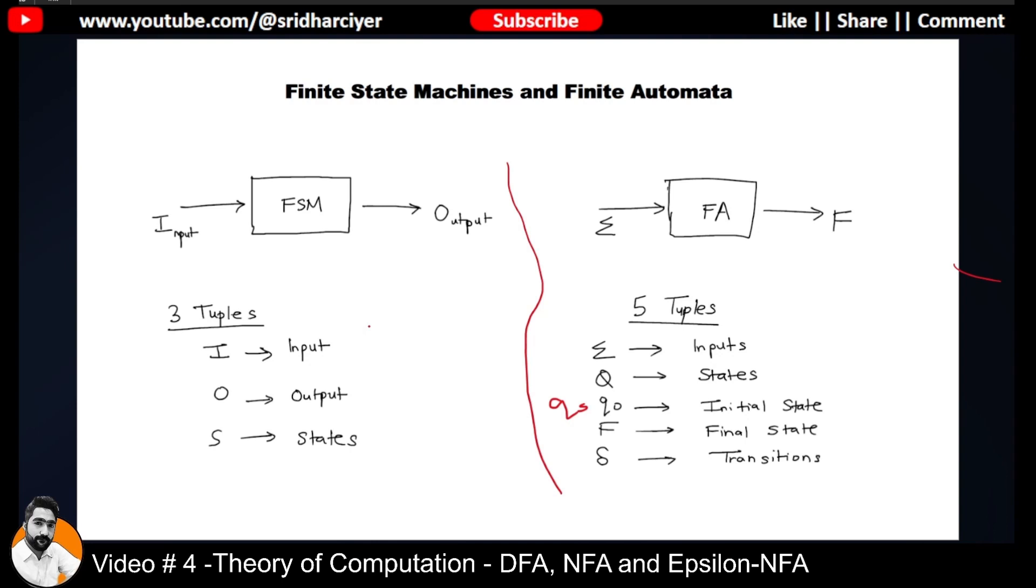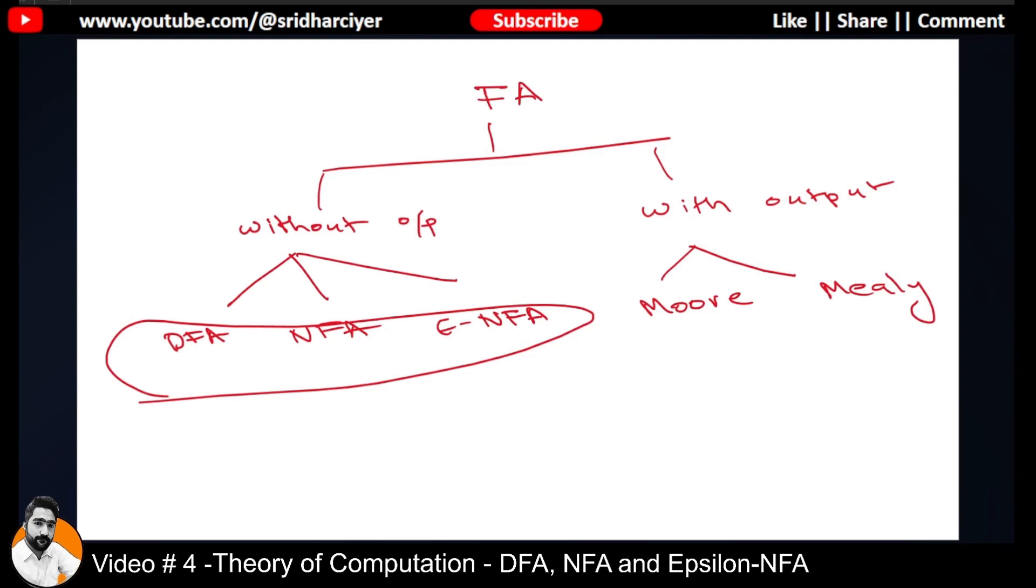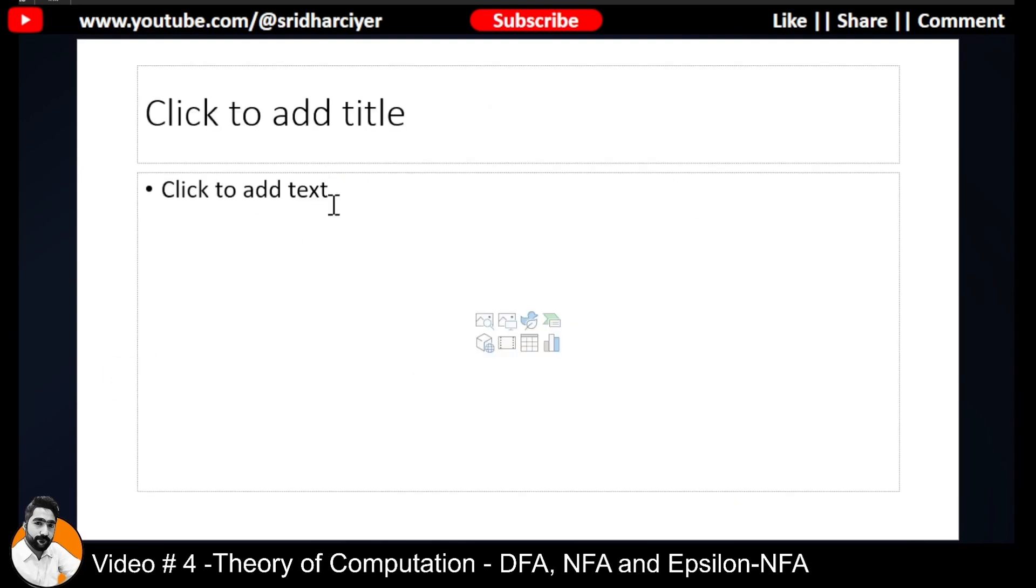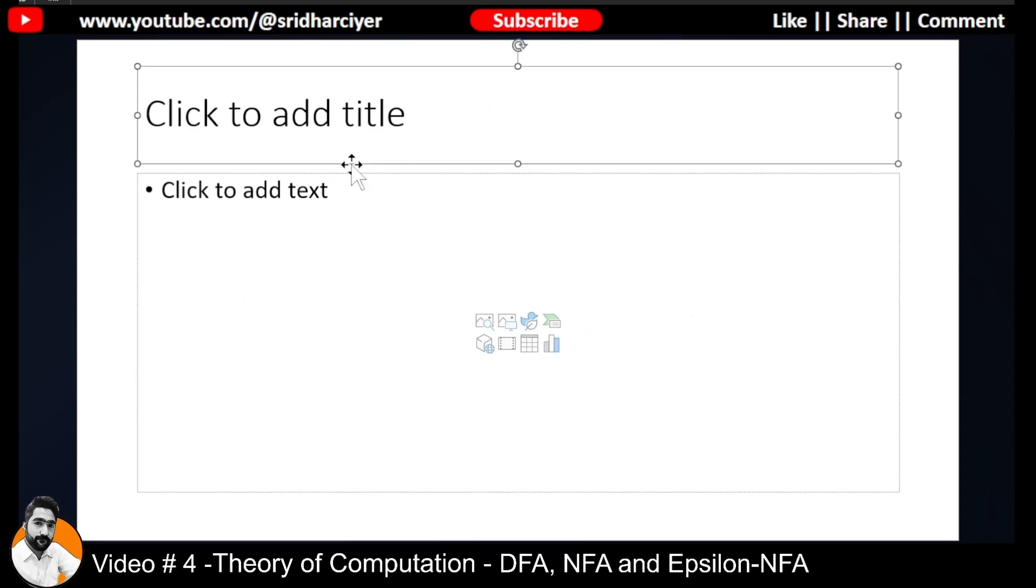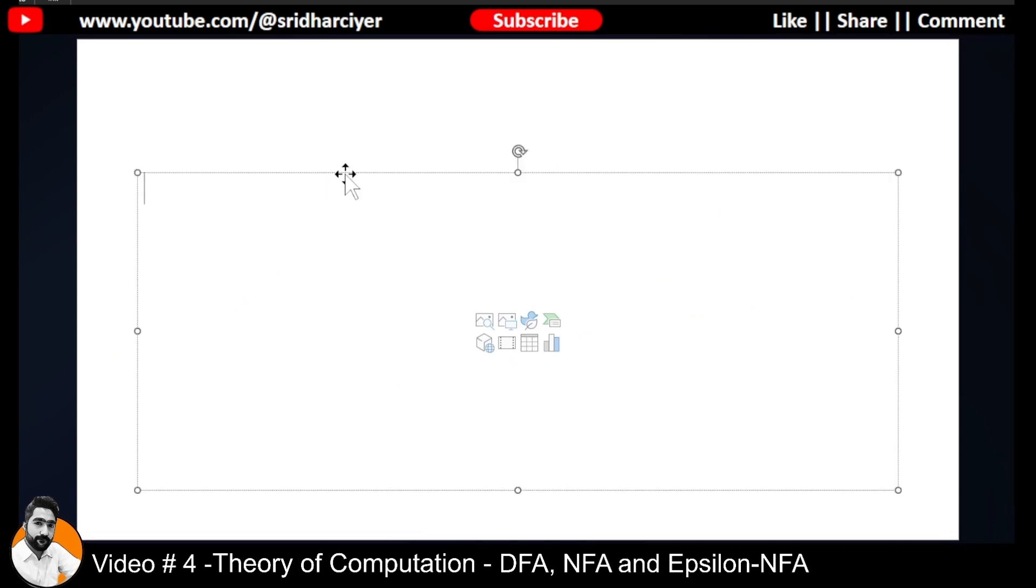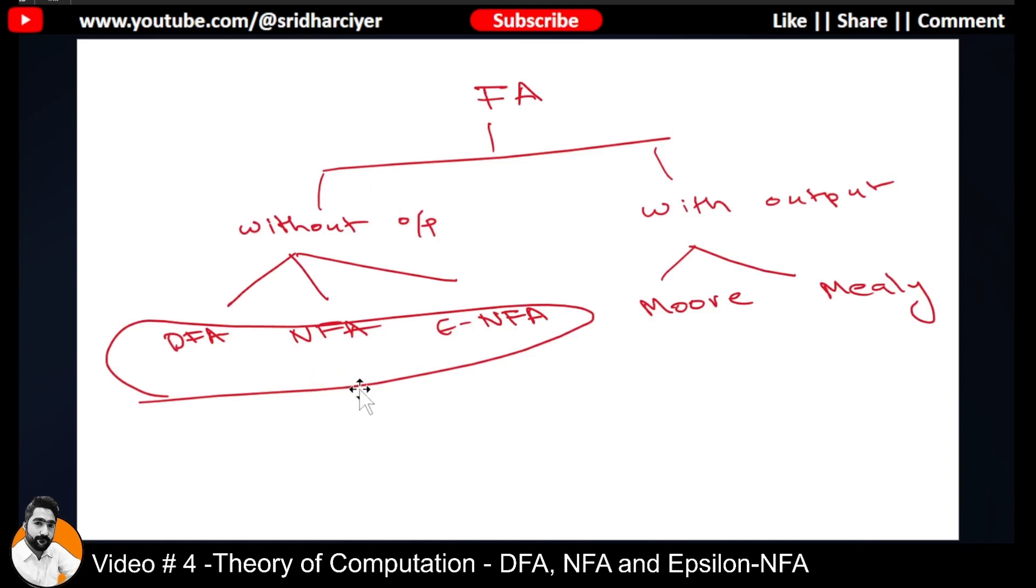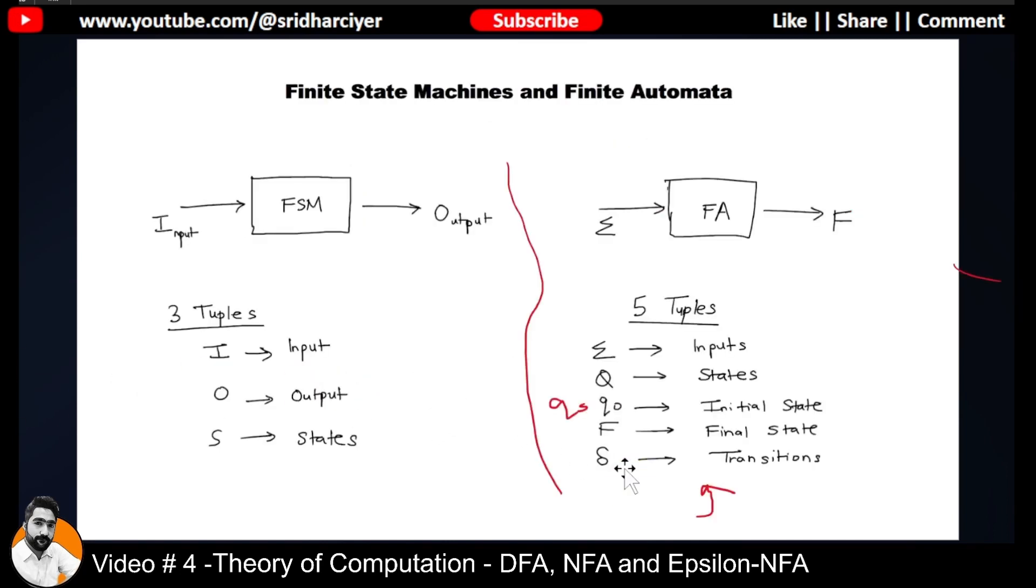Why the additional two tuples? The additional two tuples are basically added so that you would come to know what are the transitions. Transitions are nothing but if I start from QS state, then if I want to go to Q0 state or Q1 state, then what is the condition? What are the inputs? What are the states based upon which we can make a transition? That is very important. For that purpose, we need to have something called the transition symbol or the delta symbol.